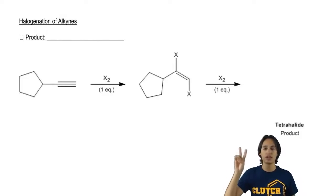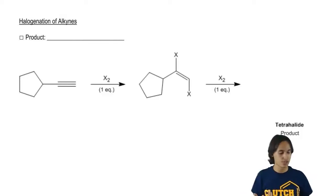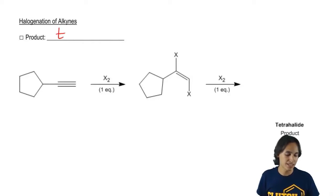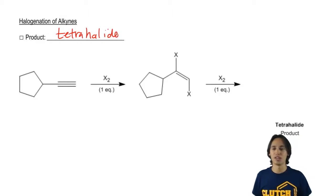But instead of getting just two halogens, I'm going to react this twice so I would actually expect to get a tetrahalide product. Obviously that's going to be a whole lot of halogens.